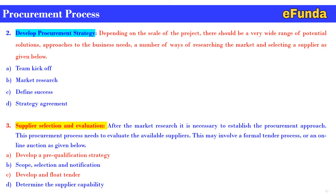Third: supplier selection and evaluation. After the market research, it is necessary to establish the procurement approach. This procurement process needs to evaluate the available suppliers. This may involve a formal tender process or an online auction. The steps include: A. develop a pre-qualification strategy, B. scope selection and notification, C. develop a float tender, D. determine the supplier capability. This is how the supplier selection is done.